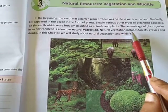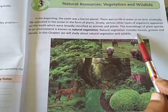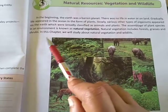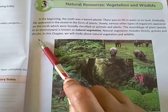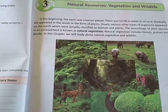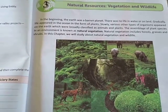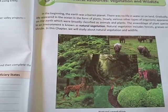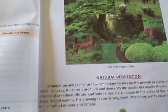Natural vegetation includes forests, grasses, and shrubs — ismein hum forest ko lete hai, grasses ko lete hai, aur shrubs ko include kerte hai.